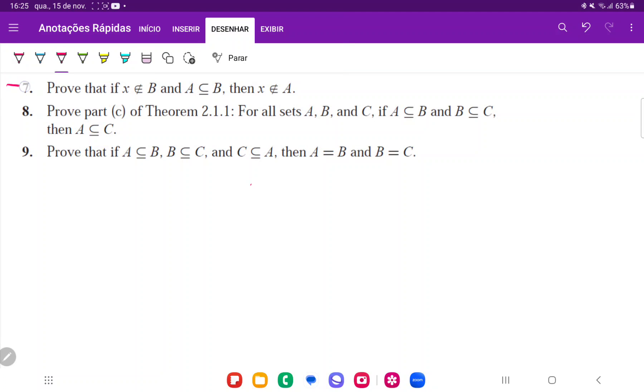Okay, so for number 7, we want to prove that if x is not an element of B, and if A is a subset of B, then x is not an element of A.